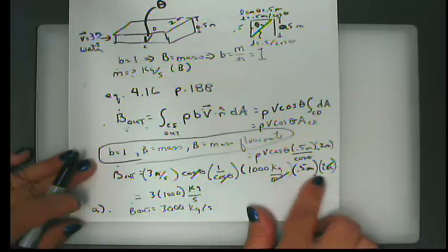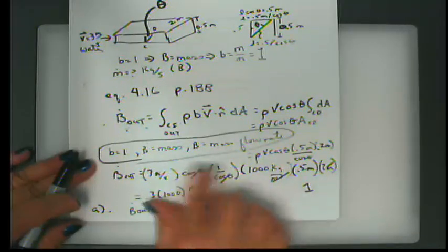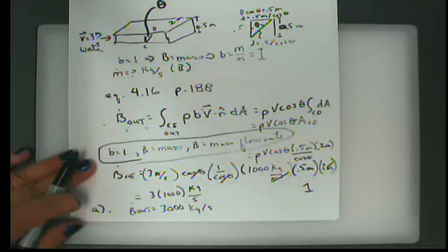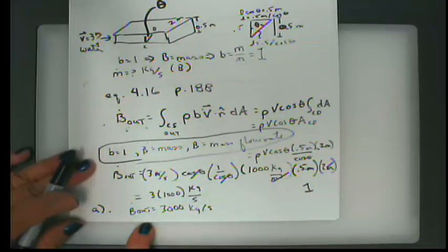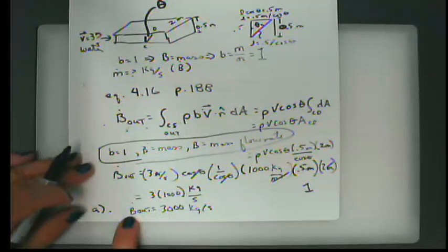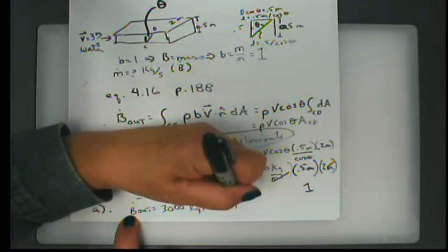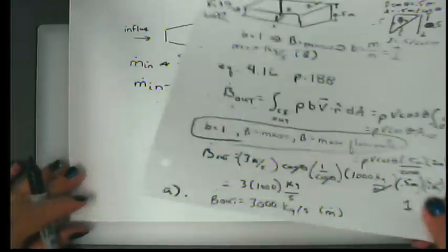The punchline of this problem: the area is 2 meters times the hypotenuse L of the triangle, where L times cosine theta equals 0.5 meters, so L equals 0.5 over cosine theta. In the equation, the cosine theta from the sloped control surface and the cosine theta from v·n cancel each other out. We're left with density times velocity times 0.5 times 2 meters squared, which is 1 m². So: rho = 1000 kg/m³, velocity = 3 m/s, area = 1 m², giving 3000 kilograms per second — a correct unit for mass flow rate.